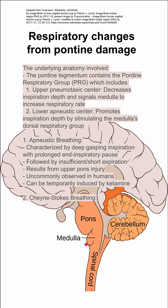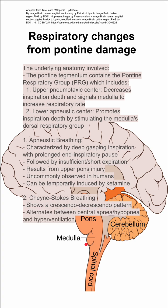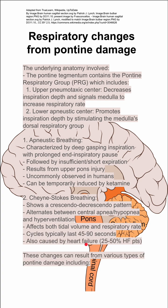There's also Cheyne-Stokes breathing. This shows a crescendo-decrescendo pattern and it alternates between central apnea, hypopnea, and hyperventilation. It affects both the tidal volume and the respiratory rate, and the cycles typically last 45 to 90 seconds each. It's also caused by heart failure, and 25 to 50 percent of heart failure patients might show this breathing pattern.